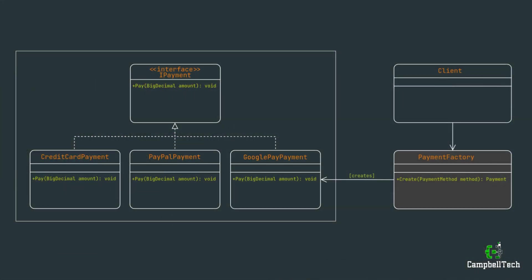Now let's look at a UML class diagram. I'm going to base my code example on a payment options use case. Notice that we have an IPayment interface with a pay method that takes in a single parameter — an amount of type double — and it returns void. Then we have three concrete classes that implement this interface, including a credit card payment, a PayPal payment, and a Google Pay payment. When a client wants to instantiate one of these concrete objects, it can make use of the payment factory class that contains a create method that takes in a payment method of type enum, which is used as the factory key for the factory method to decide which concrete implementation it should return.